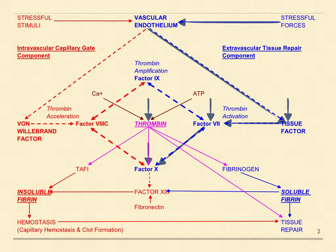The tissue repair component, which is illustrated in blue in this simplified diagram, regulates factor VII activity to govern the location, degree, and duration of thrombin generation in extravascular tissues in accord with the degree, duration, and location of stressful tissue disruption to enable tissue repair. The previous slideshow explained how the vascular endothelium alters the interaction of blood enzymes with tissue factor in accord with different types of stress.